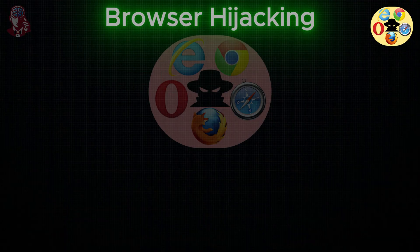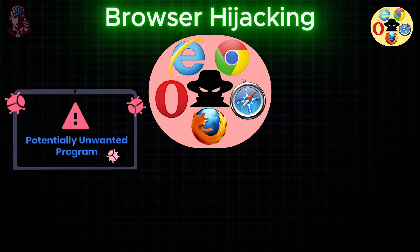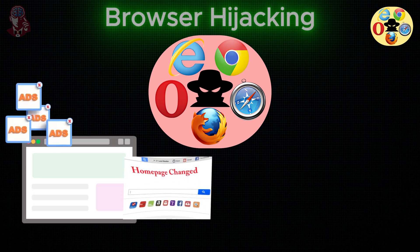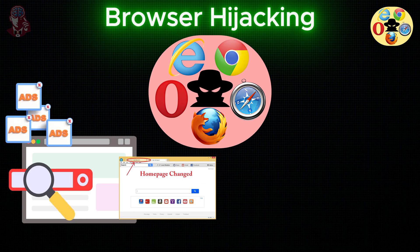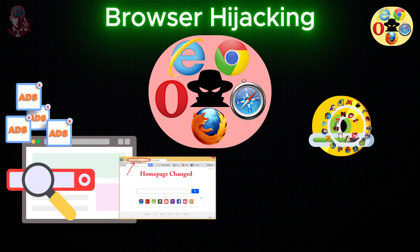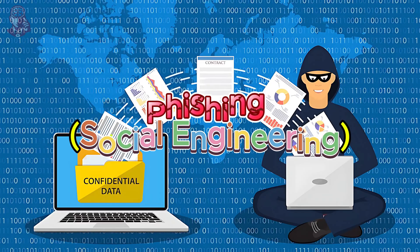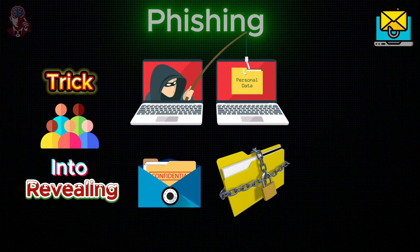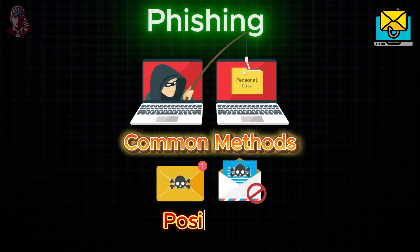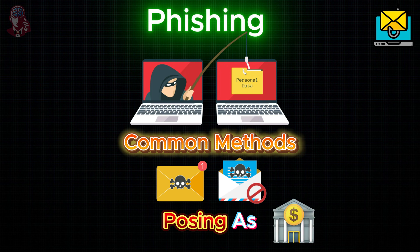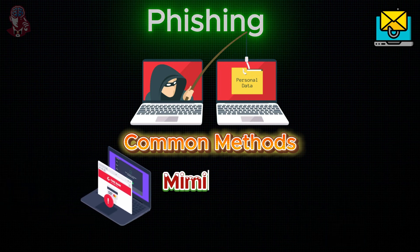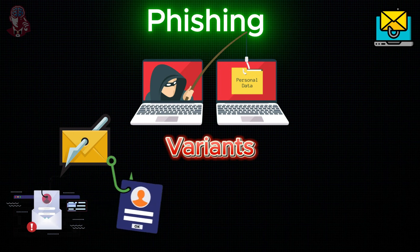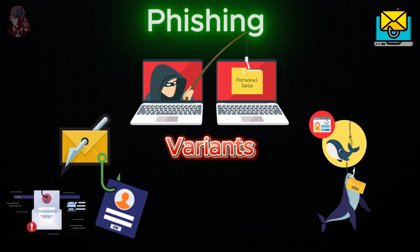Browser Hijacking: Browser hijacking refers to unwanted software that alters a web browser's settings without the user's consent. It can inject unwanted ads, change the homepage, or modify the search engine. These programs are often bundled with other software during installation. Phishing: Deceptive tactics used to trick people into revealing sensitive information, including fake emails posing as banks or governments, and spoofed websites to capture login credentials. Variants include spear phishing (targeted personalized attacks) and whaling (targeting high-profile executives).